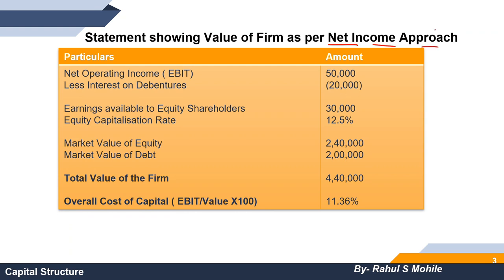First, we will write Net Operating Income, that is EBIT. The EBIT value given in the question is 50,000. From that we subtract the interest of 20,000 (which is 10% of 2,00,000 debentures), and we get the answer 30,000. This is called earnings available to equity shareholders.